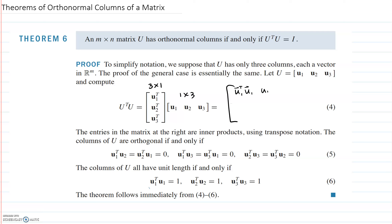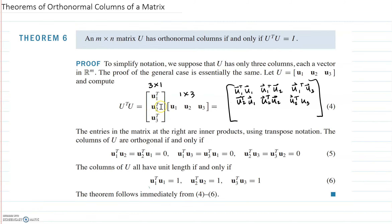The entry at row 1, column 2 would be U1 transpose times U2. Then we'd have the entry at row 1, column 3. We can do this for the next row — the second row would be U2 transpose times each of these in their respective spots. And finally, on the last row, the entry at row 3, column 1 would be U3 transpose times U1, then U3 transpose times U2, and U3 transpose times U3.